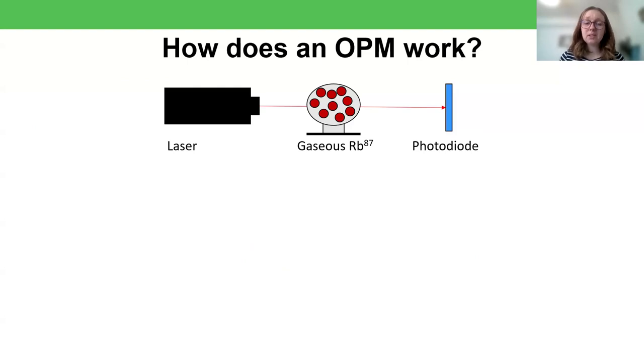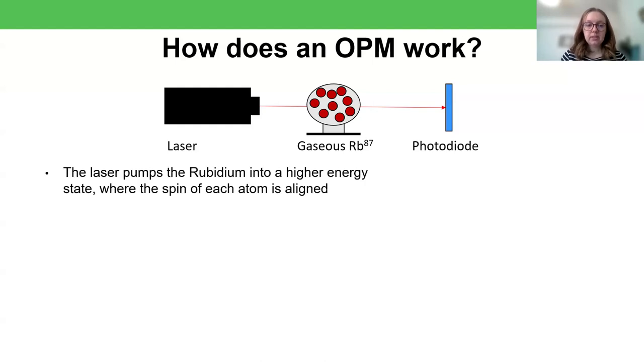So moving on to the second section, how does an OPM work? Well, fundamentally, it's really just three components. A laser, a gas, in our case we use rubidium-87 sensors, and a photodiode, which is just a device that measures how much light reaches it and outputs that as a voltage. So the purpose of the laser is to push the rubidium into a higher energy state, where the spin of the atoms is aligned. So you can think of all of the rubidium atoms as having a spin, a direction. And naturally, they're all randomly distributed. But when the laser shines through the gas, it can push the atoms into a particular direction. And so what the laser is really doing is that it's giving energy to the gas while it pumps it into this higher state. But once everything's aligned, there's nothing left for the laser to do. So the gas is transparent to it, and the maximum amount of laser light reaches the photodiode.